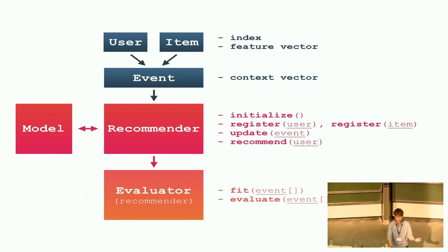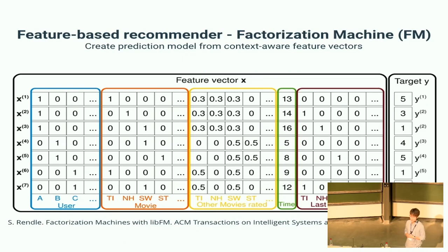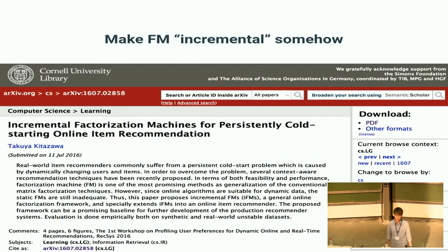How to handle feature vectors in a recommender algorithm is very important. One of the most famous example algorithms is the Factorization Machine, which realizes feature-based recommendation. I extended this algorithm into an incremental variant — you can find the paper on arXiv — and I also implemented this in Flurs.